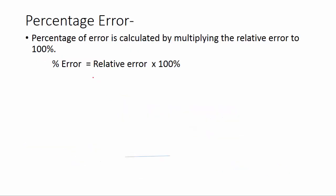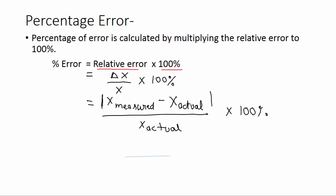Percentage error is calculated by multiplying the relative error by 100%. So % Error = Relative error × 100%. We can plug in the equation of relative error here.